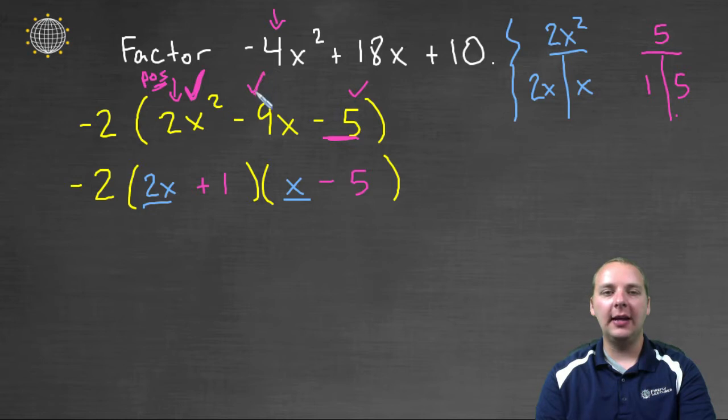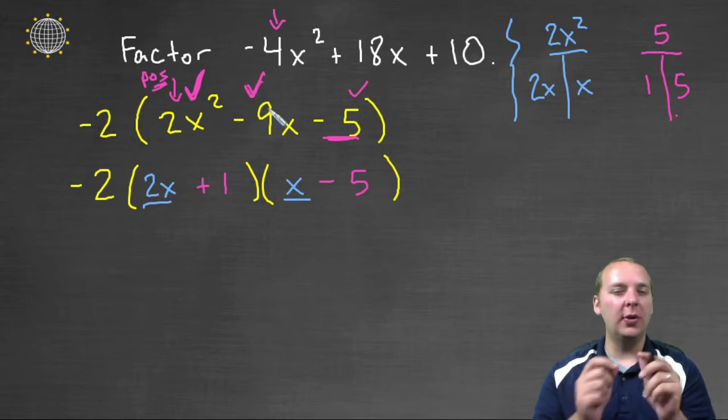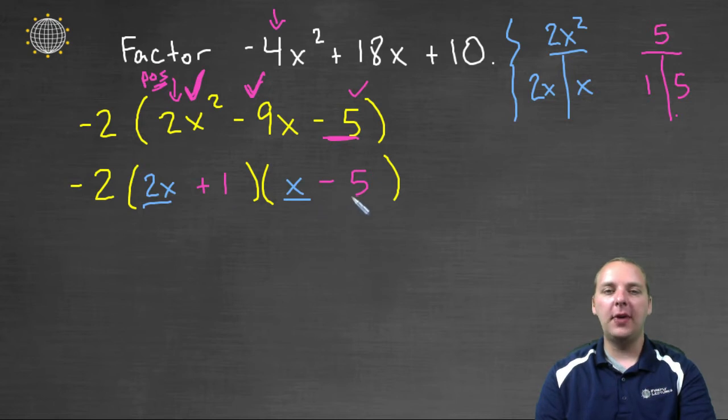And then I'm just hoping with those particular signs that positive 1 and -5 do in fact multiply to -5. And in fact they do.